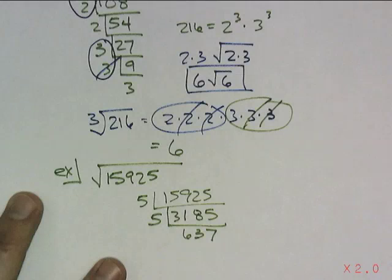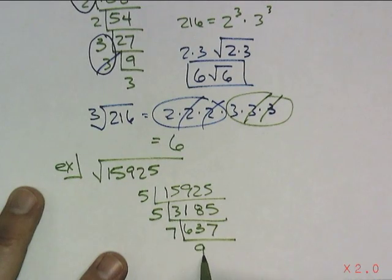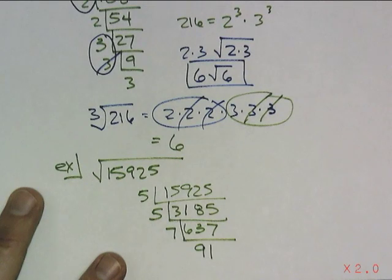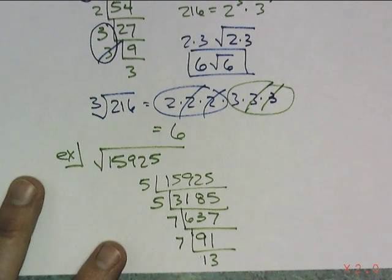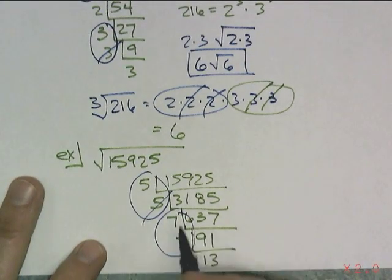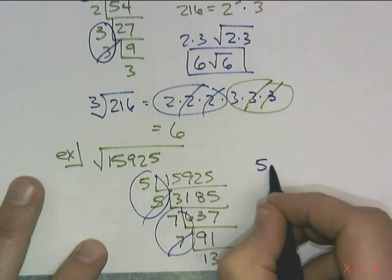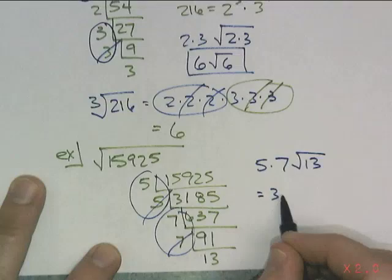Now I need to figure out what 237 is divisible by. It's not even, so start checking prime numbers on your calculator. 7 goes in there and gives 91. Then checking again, 7 does indeed go into 91 thirteen times. So now I've got a pair of 5s — one escapes, one is deceased. A pair of 7s — one escapes, one is deceased. That's 5 times 7 escaped, and left in jail is a lonely 13, giving me 35 root 13.